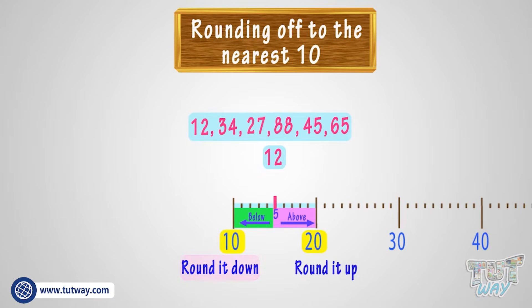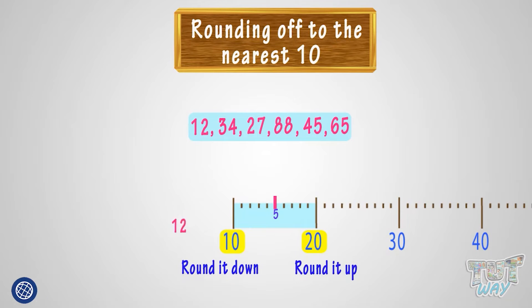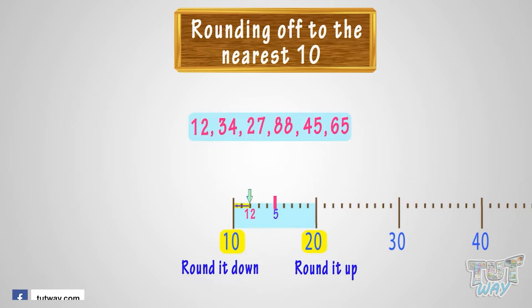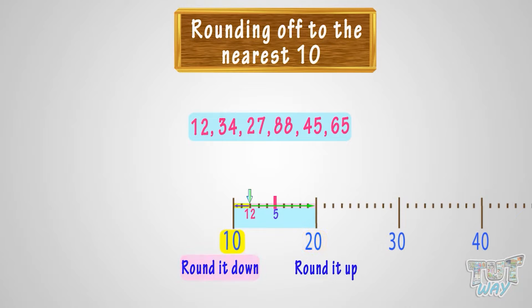Here, 12 is below the 5 mark. Also, 12 is only 2 numbers away from 10, whereas it is 8 numbers away from 20. So we will round it down to 10.